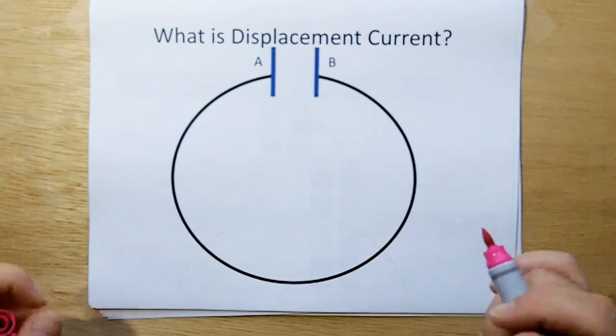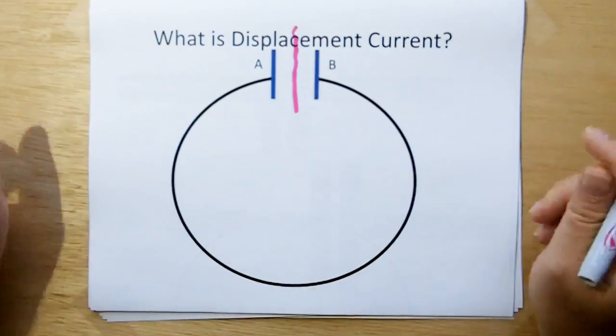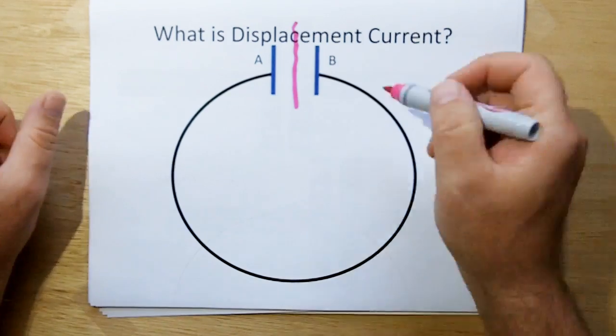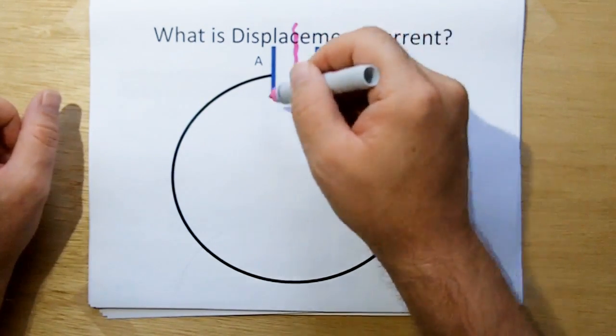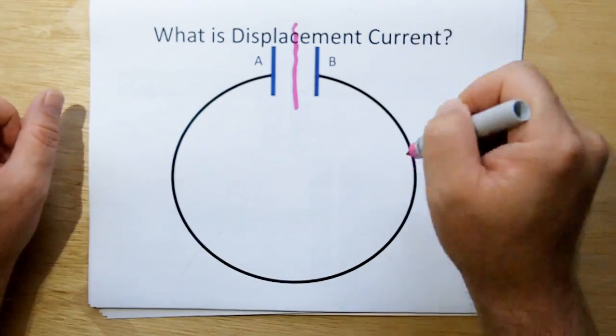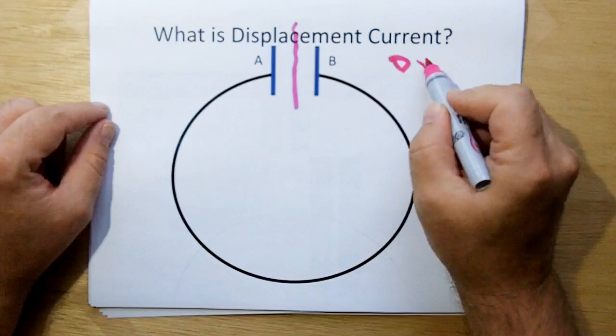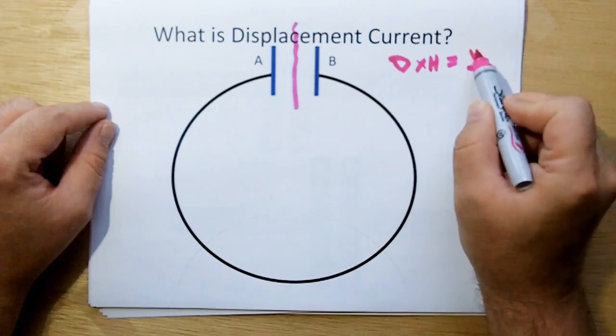So what is it? What Maxwell did is he took a little experiment here of a loop of wire with two capacitive plates and he drew an imaginary barrier here. And he computed the changing electric field lines across the capacitor to show that the rate of change in the electric field line is equal to the current in the wire. And if we're going to show that in point form, that's the curl of H is equal to J.